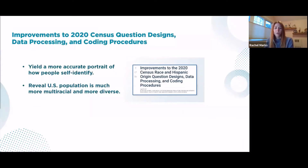We improved the ways that we process the data and code the responses to these questions. These improvements enable a more thorough and accurate depiction of how people self-identify, yielding a more accurate portrait of how people report their Hispanic origin and race. These changes reveal that the U.S. population is much more multiracial and more racially and ethnically diverse than what we measured in the past. We're confident the differences in the overall racial distributions are largely due to improvements in question design and data processing, as well as demographic changes over the past 10 years.